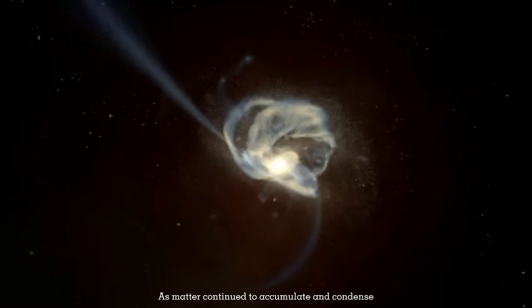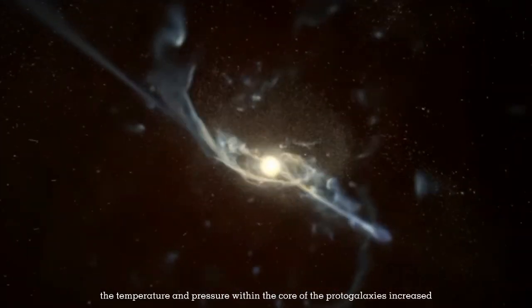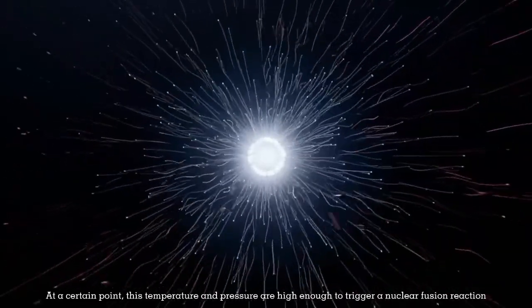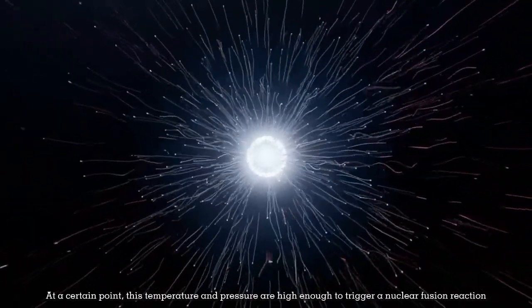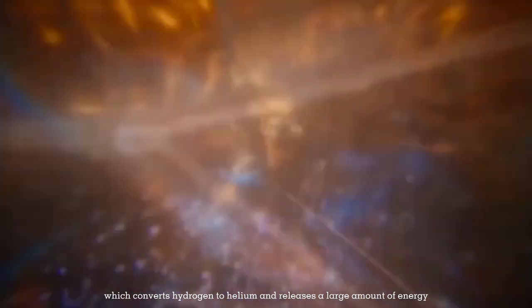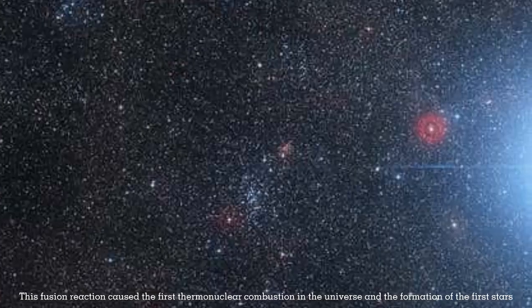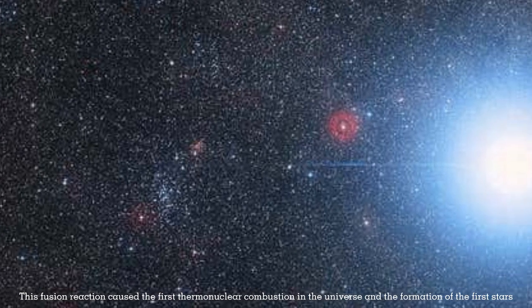This process gradually formed small-scale structures called protogalaxies. As matter continued to accumulate and condense, the temperature and pressure within the core of the protogalaxies increased. At a certain point, this temperature and pressure are high enough to trigger a nuclear fusion reaction, which converts hydrogen to helium and releases a large amount of energy. This fusion reaction caused the first thermonuclear combustion in the universe and the formation of the first stars.